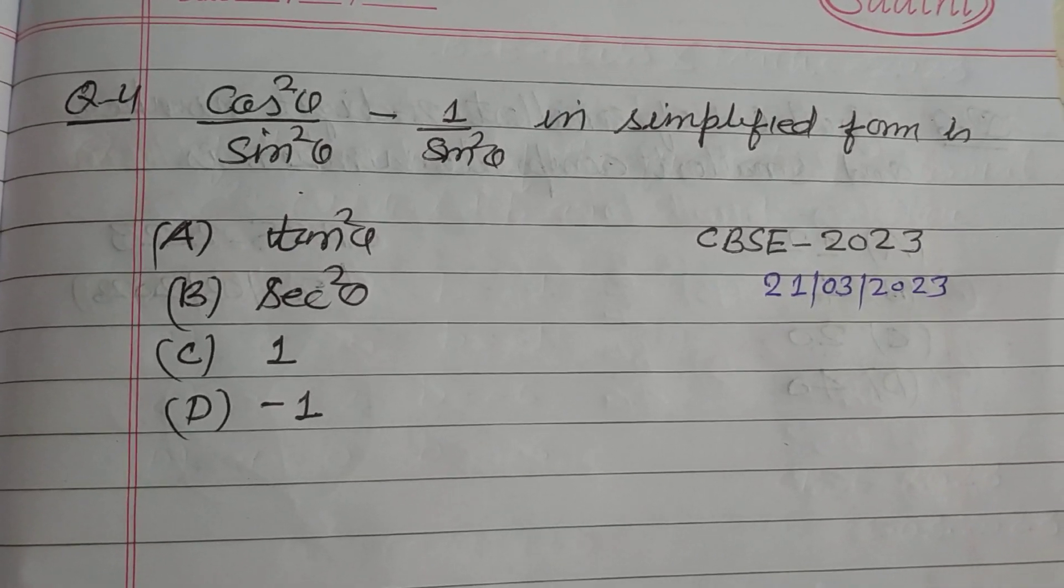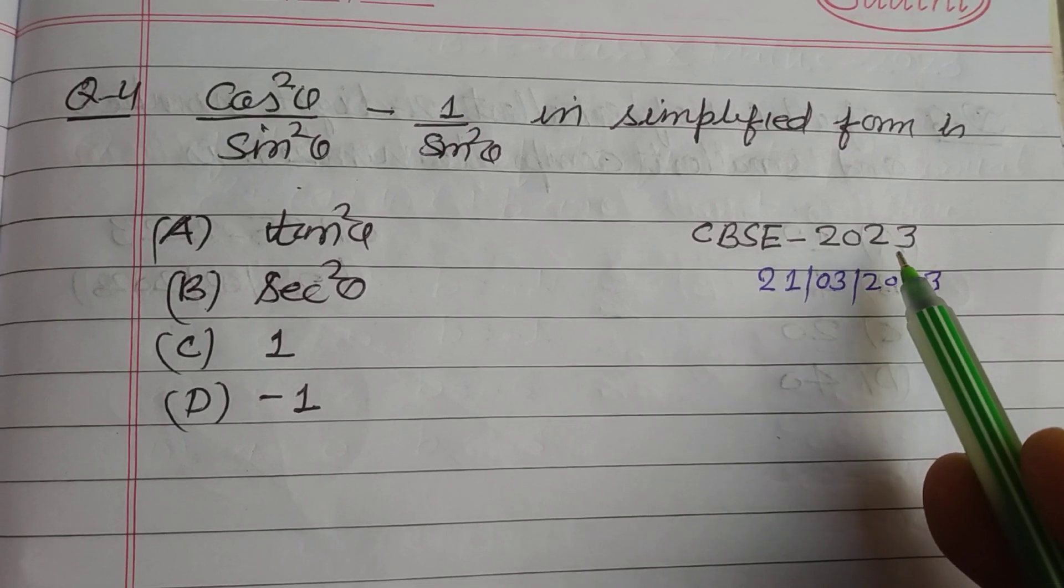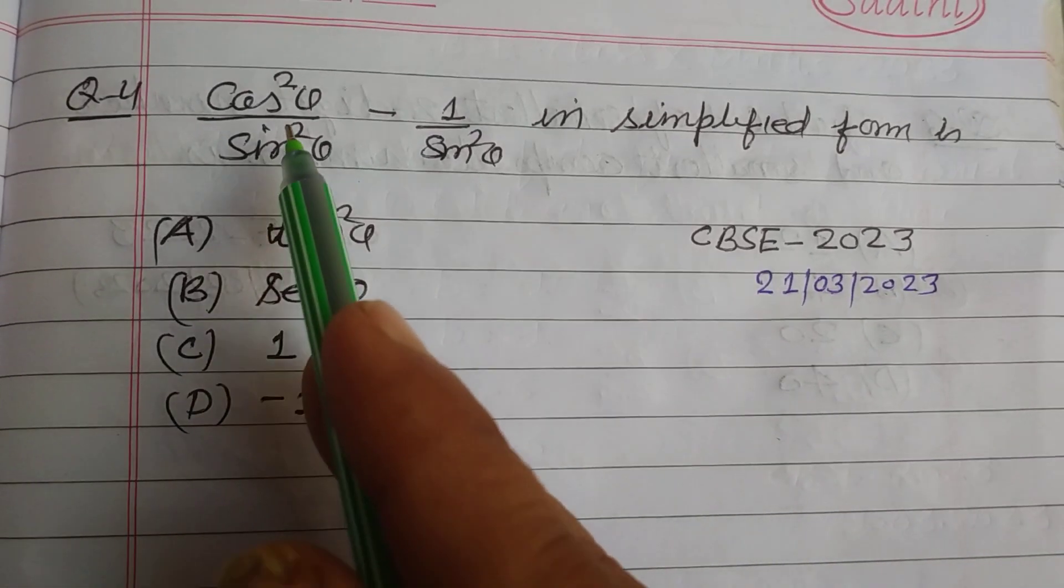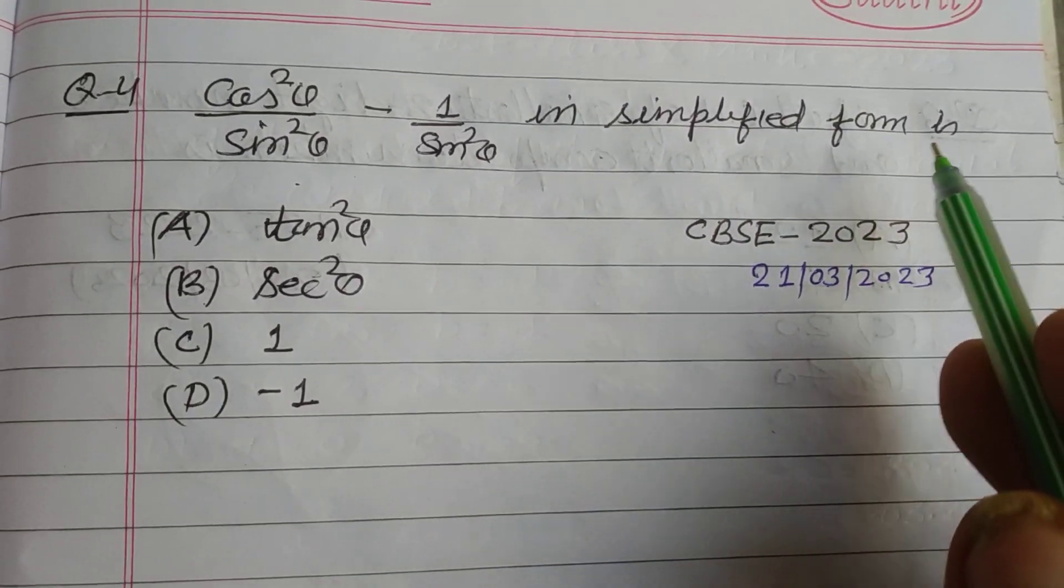Hello student, welcome to this YouTube channel. Question from CBSE class 10 2023 board exam: cos square theta upon sine square theta minus one upon sine square theta in simplified form is?